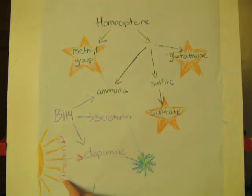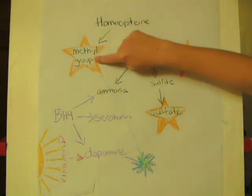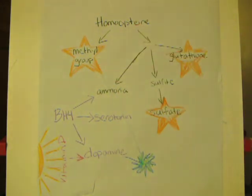BH4 and vitamin D are both involved in making dopamine. And methyl groups, along with the enzyme COMT, are responsible for breaking dopamine down.